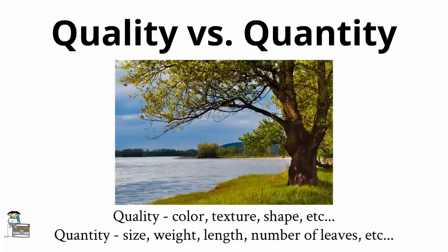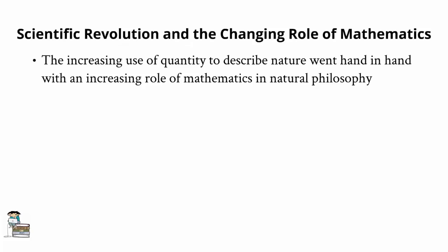During the scientific revolution, natural philosophers became increasingly concerned with using quantity to describe nature, and this emphasis on quantity went hand in hand with the growing role of mathematics in natural philosophy. As we mentioned at the beginning of the lecture, mathematics was for a long time seen as outside the realm of natural philosophy. But philosophers such as Copernicus, Kepler, Galileo, and Newton increasingly made use of mathematics in their natural philosophical works.